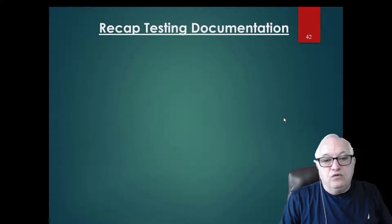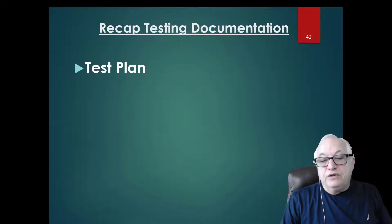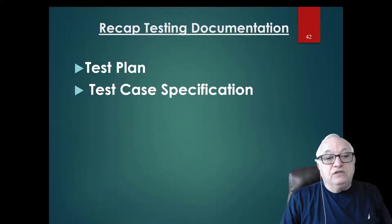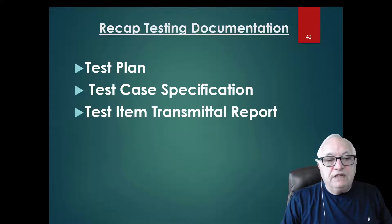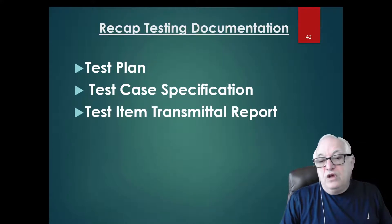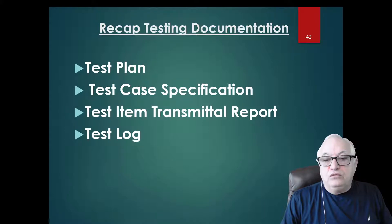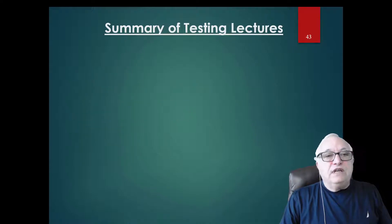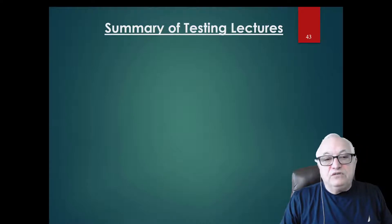That concludes today's content. We discussed the test plan, which is a document that increases your probability of success; the test case specification, where you state all steps, inputs, and outputs for each of your tests; the test item transmittal report, which describes the configuration of what you're going to receive and test; and the test log, where you document everything done in the lab, who is doing it, and who is witnessing it.